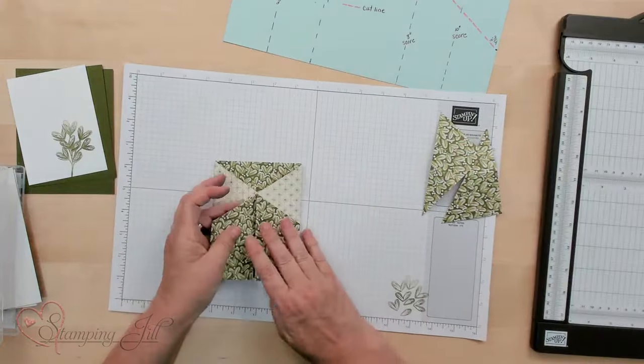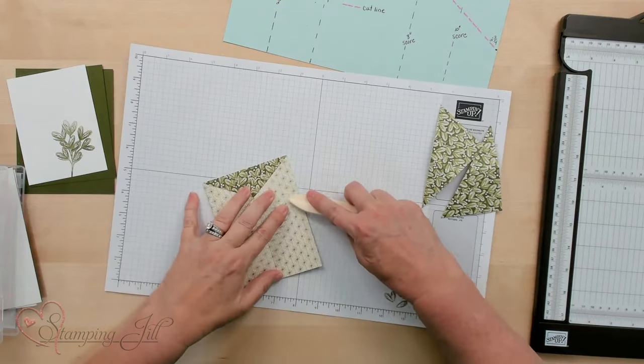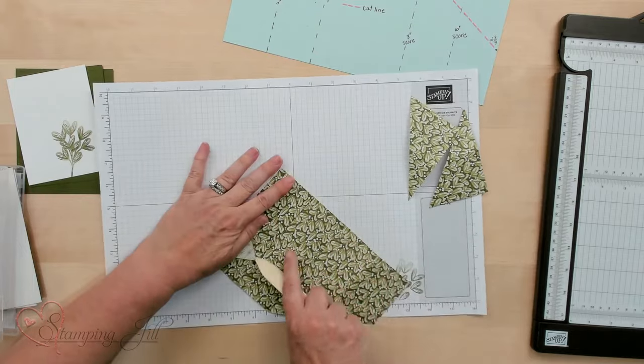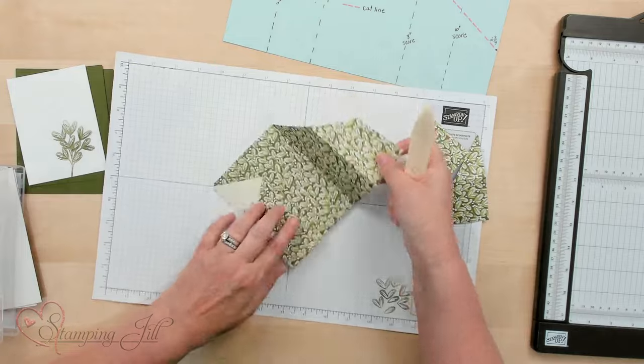So then you can see the cool gold on that. You want to make sure that you take your bone folder and really crease those edges really good back and forth so that they lay flat. Get those creases down really nicely.